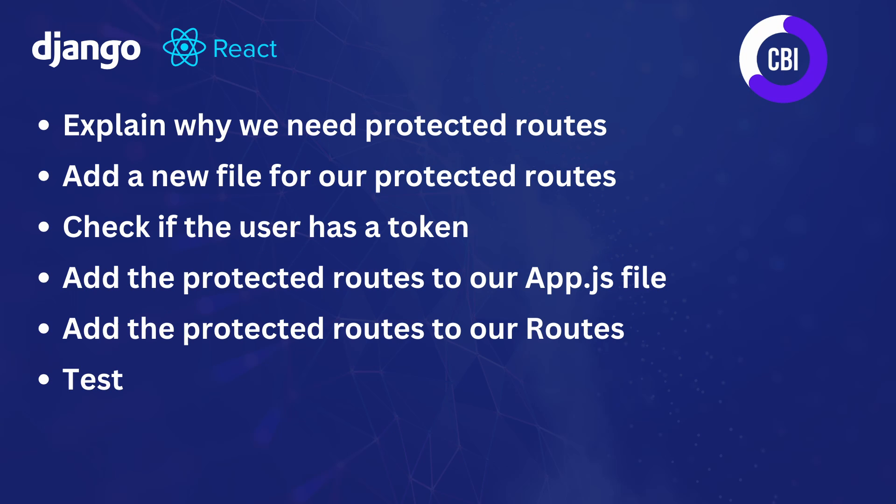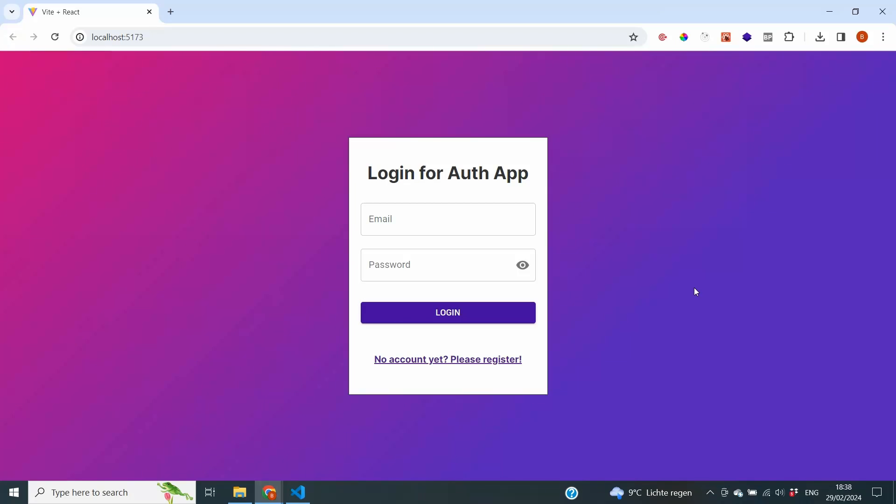For protected routes in this video we're going to address six main points. I'm going to start with an explanation on why we need protected routes in our application. Next we're going to create a new file for our protected routes and do a check if the user has a token or not. Then once the logic is complete we're going to add the protected routes to our app.js file, apply it to the routes that need protection, and finally test it out.